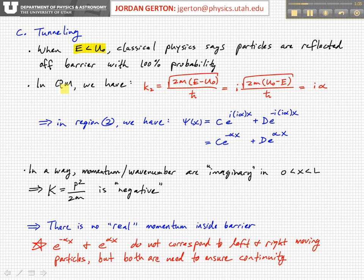We can think of this also in terms of a wall where particles just get reflected. In quantum mechanics, because of the wave-like nature of particles that are small enough to have quantum mechanical effects, we have to solve the Schrödinger equation. When E is less than U0, then K2 — which is equal to the square root of 2M times (E minus U0) over ℏ — becomes imaginary. So we have i times some real number, which we call alpha, where alpha equals the square root of 2M(U0 minus E) over ℏ.